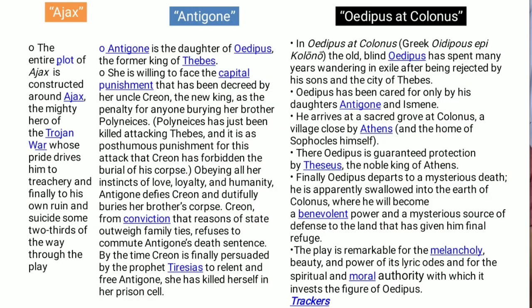And then he also wrote Ajax, Antigone, Oedipus at Colonus, and the present play, Oedipus Rex or Oedipus the King. But the latter, the last three plays—Antigone, Oedipus at Colonus, and Oedipus Rex—these are similar kind of stories. Not similar in plot structure, but the actual incidents have some kind of relations within each.